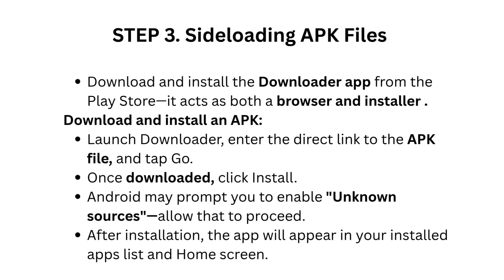Step 3: Sideloading APK files. Download and install the Downloader app from the Play Store. It acts as both a browser and installer. Download and install an APK.